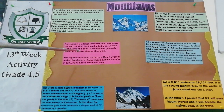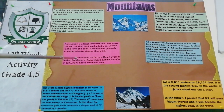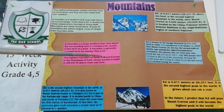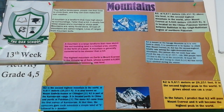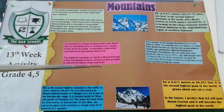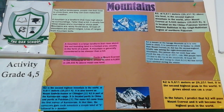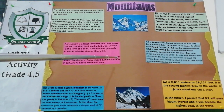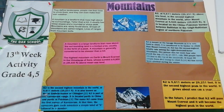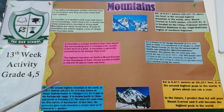The highest mountain on earth is Mount Everest in the Himalayas. It is 8,850 meters and 29,035 feet above sea level. K2 is the second highest mountain in the world, at 8,611 meters.